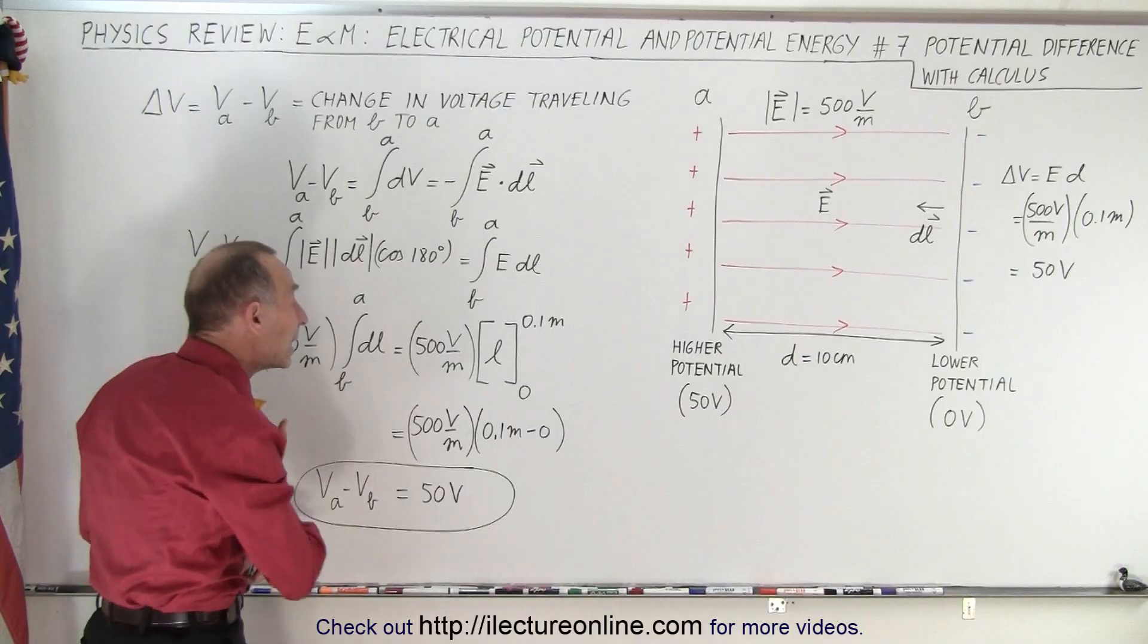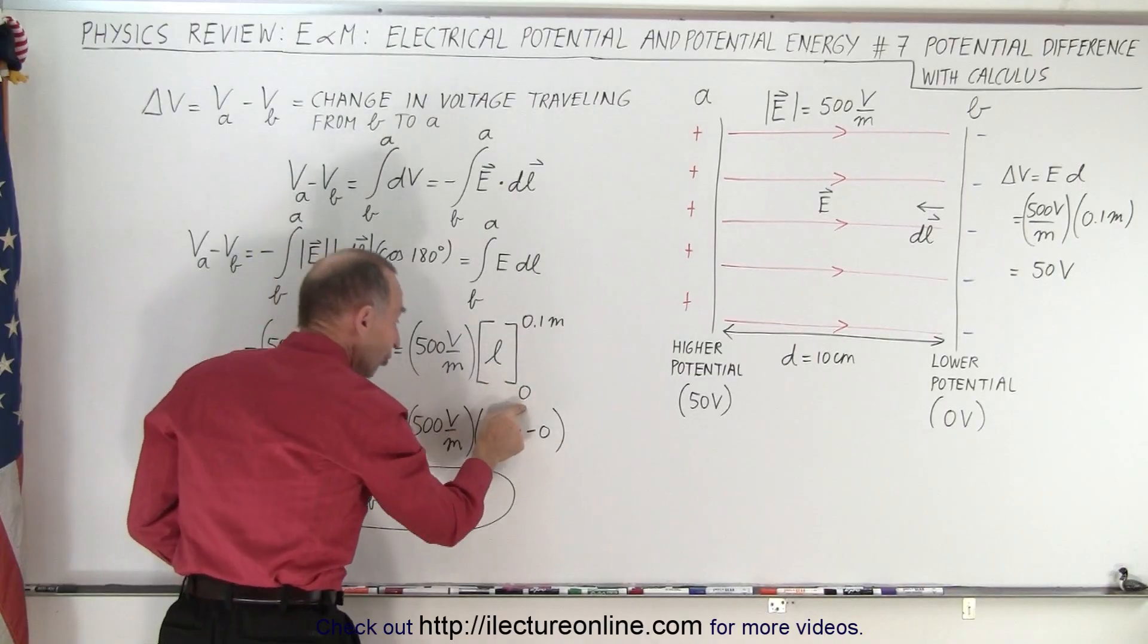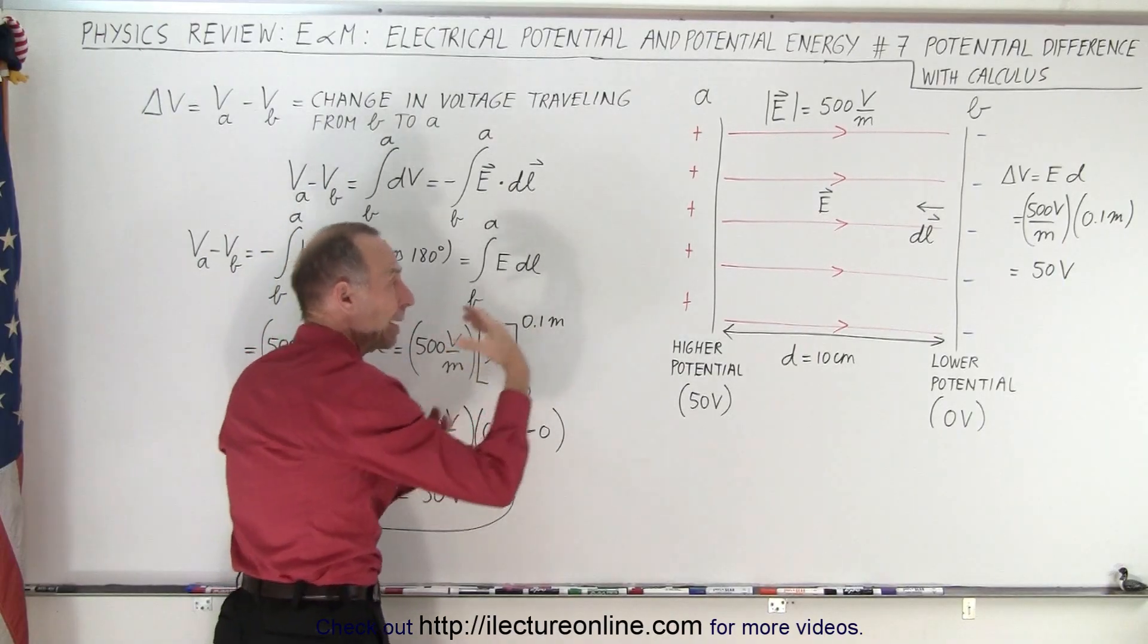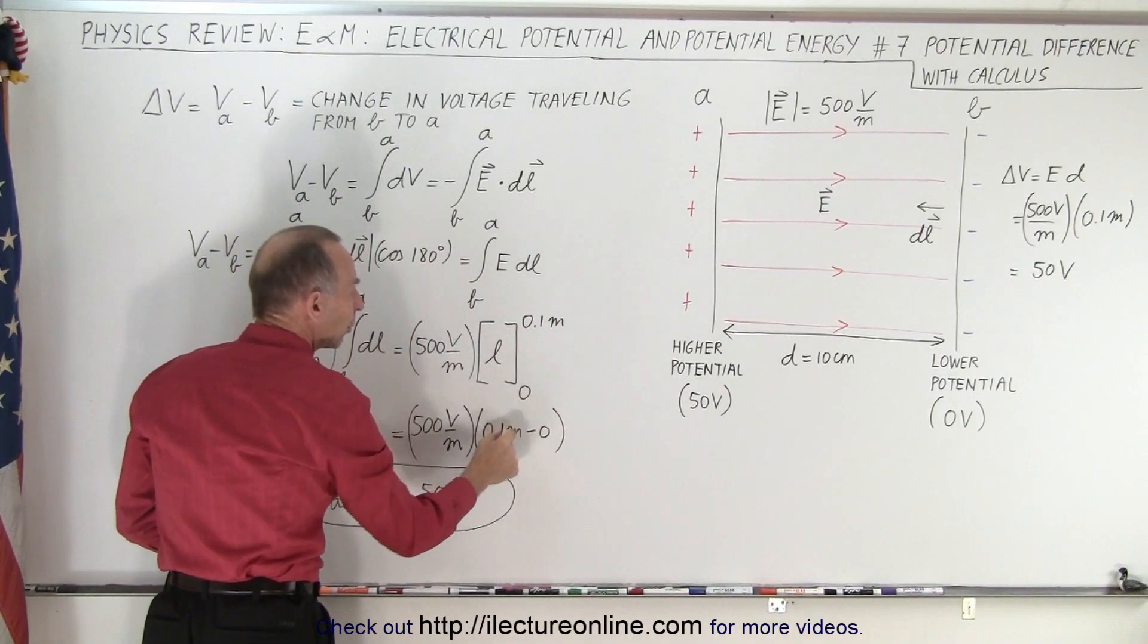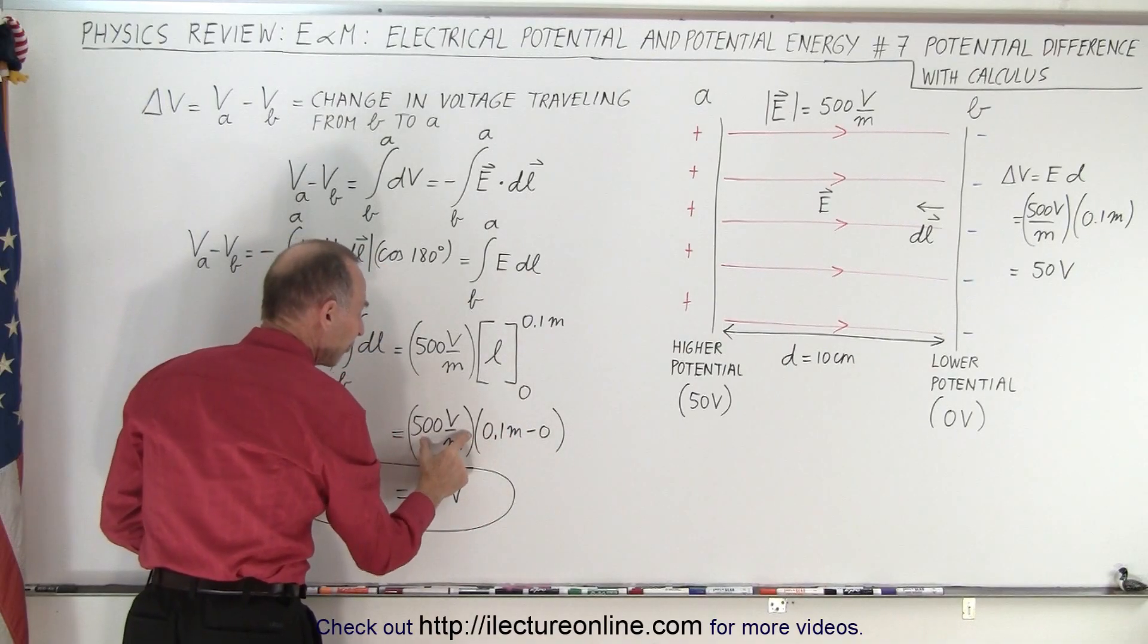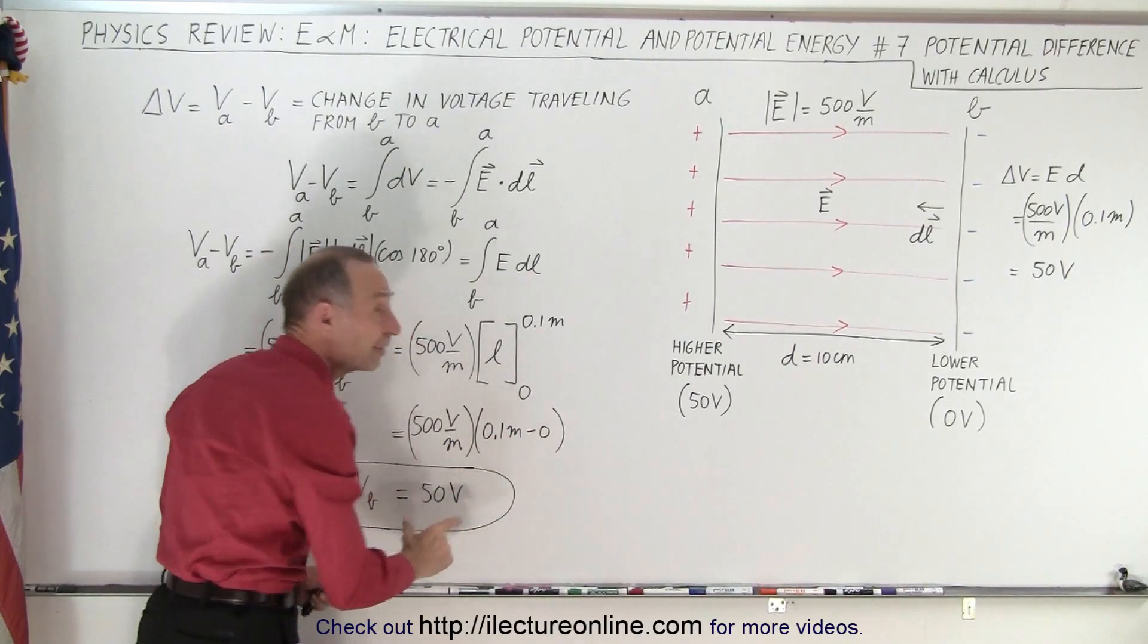So that means that when we integrate from B to A, we simply go from starting point to ending point in magnitude, and therefore this is the high minus the low, or 0.1 meter minus zero, times the electric field giving us a positive 50 volts.